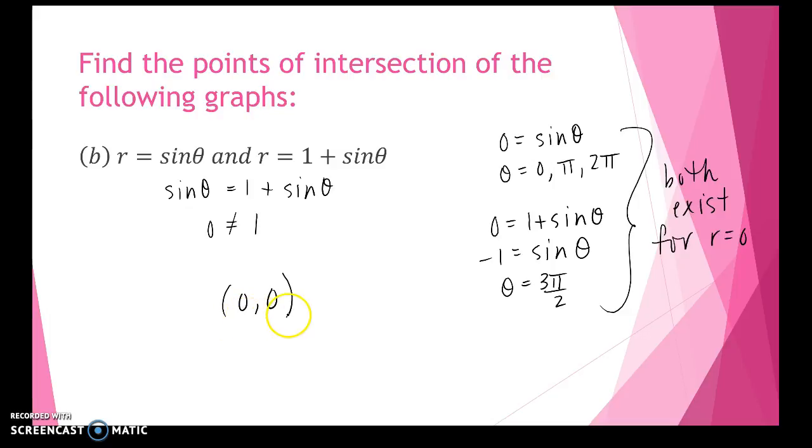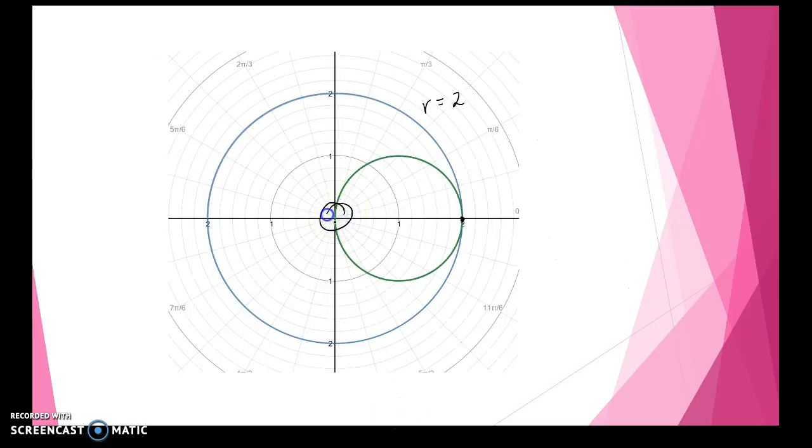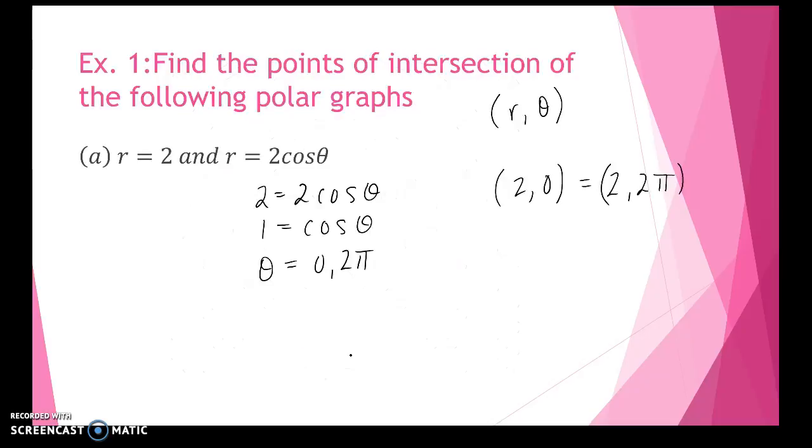Now we know if the radius is 0, the value of theta doesn't matter, because I'm not going anywhere from the pole. So for us, with these functions we always have to check at the pole. If both functions give us a value of theta that exists when the radius is equal to 0, then 0, 0 will be a point of intersection. Now just to go back to the first one real quickly, we see that they definitely don't intersect at the pole. And if I were to go back and check where r equals 0, plugging it into that function, theta doesn't exist when r equals 0. So 0 comma 0 wouldn't be a point of intersection anyway.